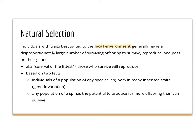Natural selection is based on two facts. First: individuals of a population of any species vary in many inherited traits — this is called genetic variation. We went over that a lot in genetics. There are different types of genes, and those lead to natural selection, with some genes being better suited to the local environment. Second: any population of a species has the potential to produce far more offspring than can survive.